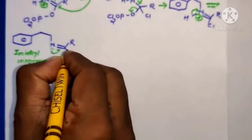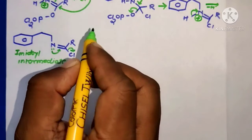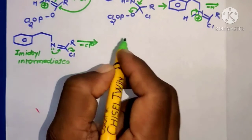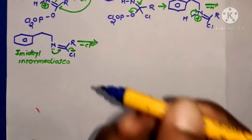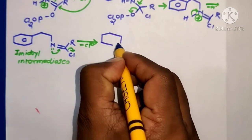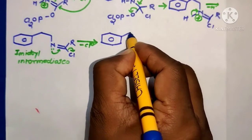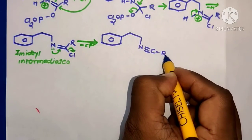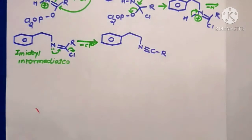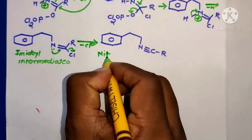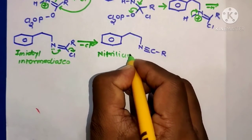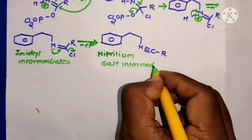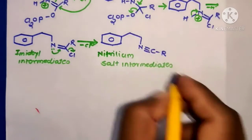The imidoyl intermediate then has the nitrogen's bonded electron pair separate to convert the double bond to a triple bond, with elimination of Cl⁻ ions. This gives the nitrilium salt intermediate, whose structure is: benzene-CH2-CH2-N≡C-R, where nitrogen carries a positive charge.